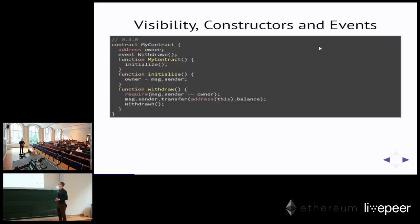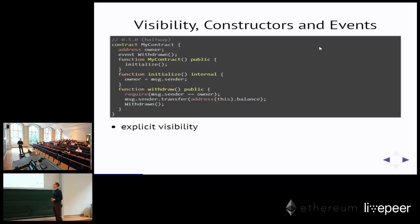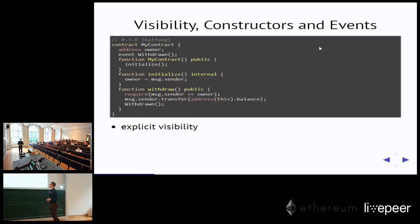The bug is that this initialize function is meant to initialize the smart contract — it should only be called from the constructor, only from a privileged user. The reason is it sets the owner. But since there is no visibility specifier, it's publicly visible. It can be called by anyone, so anyone can change the owner of this contract. Most of you know this is something that actually happened.